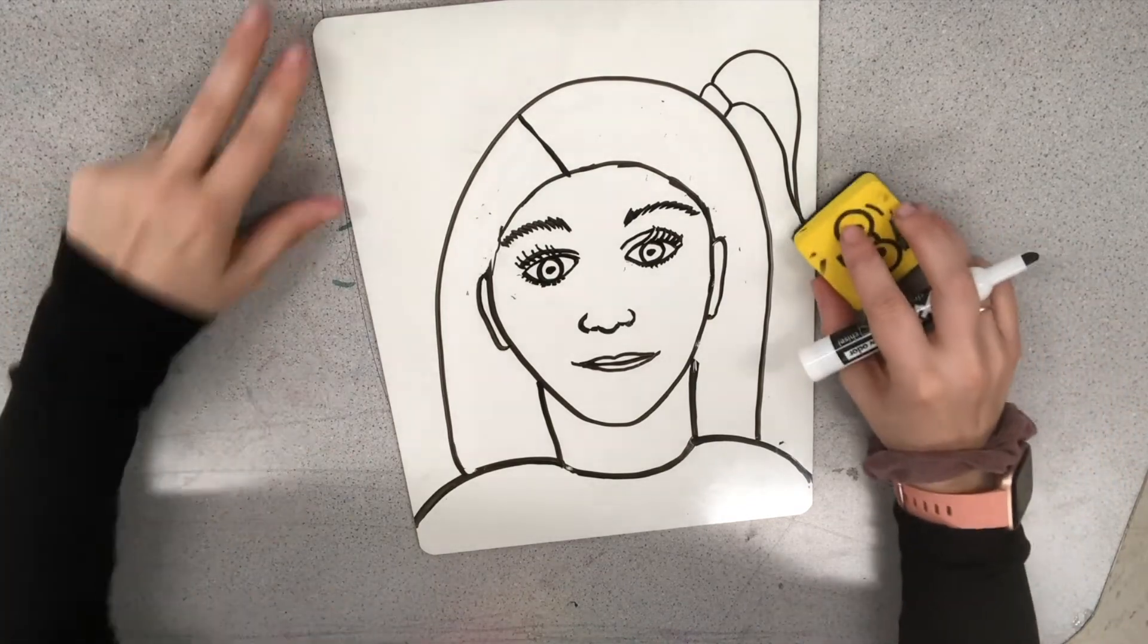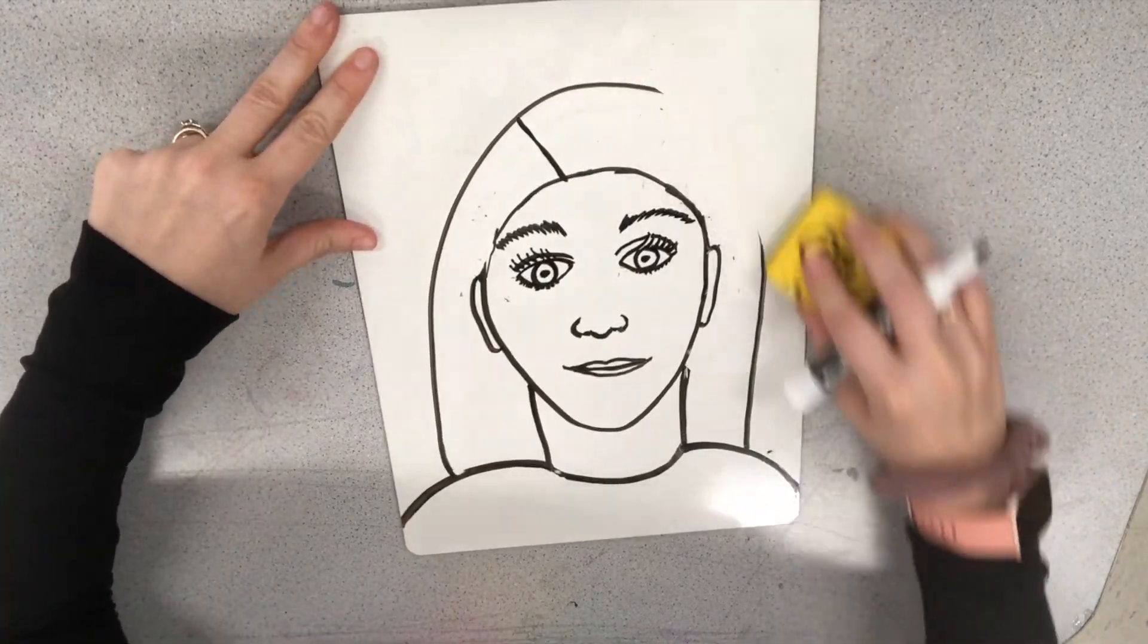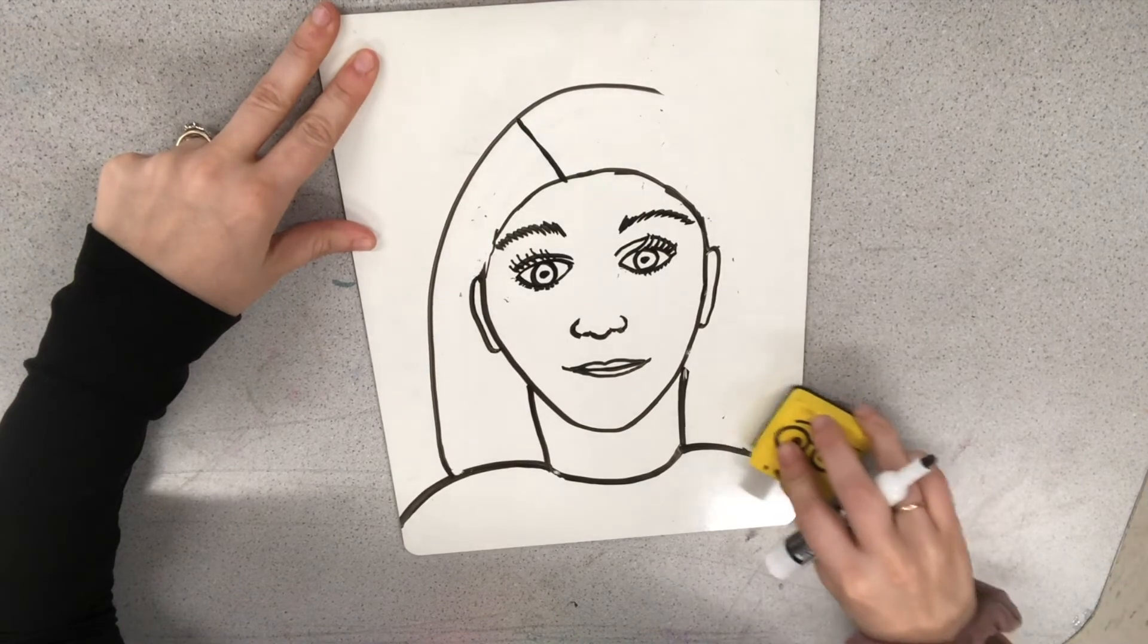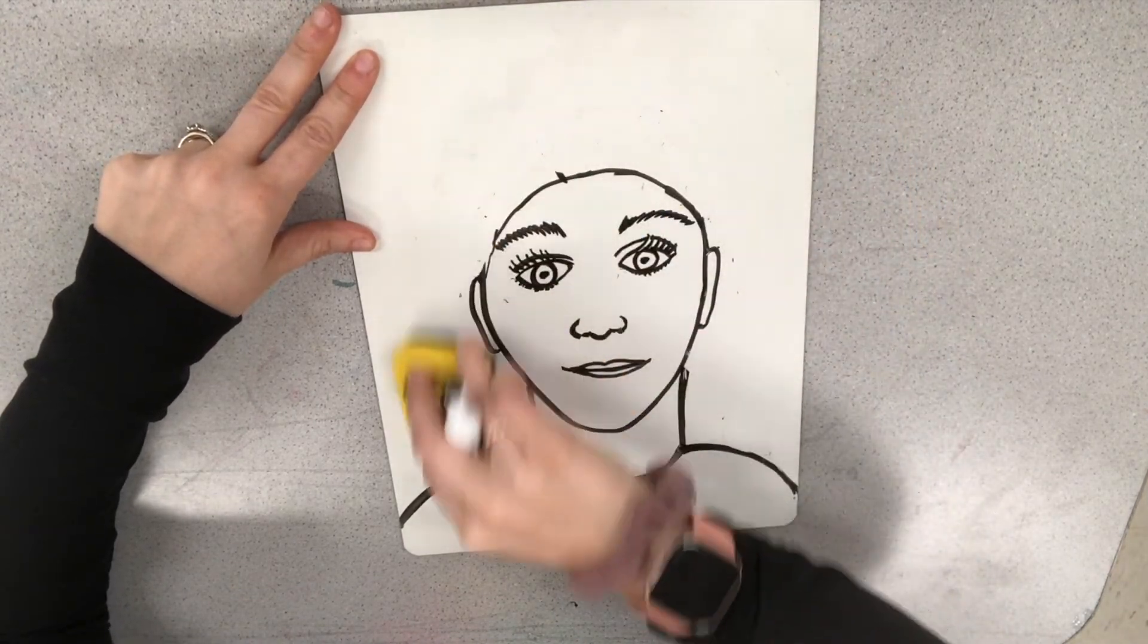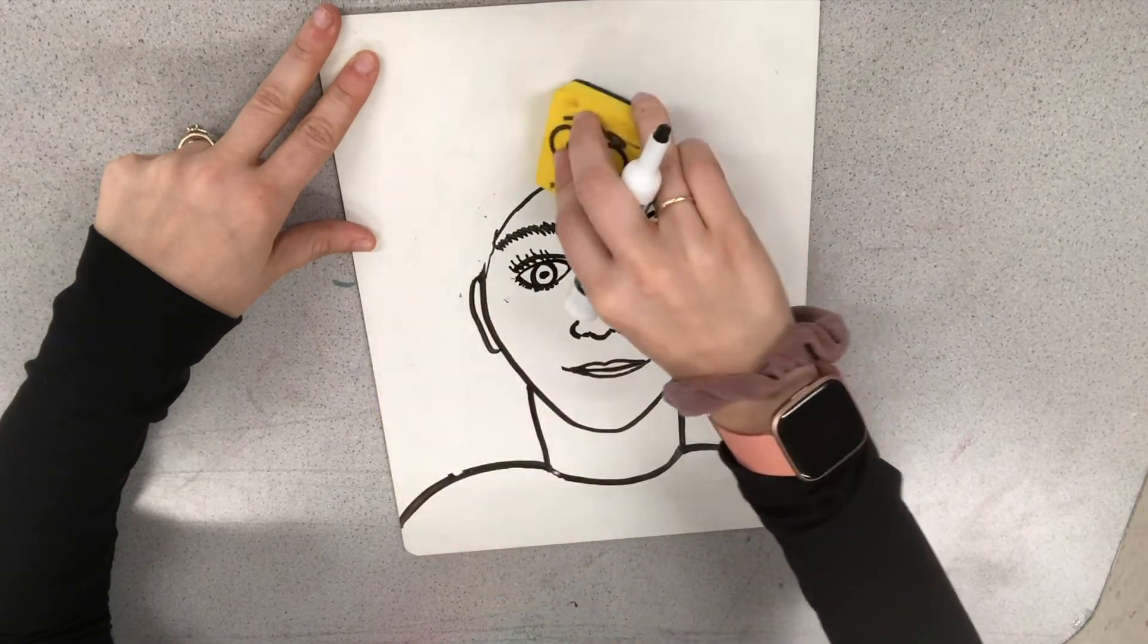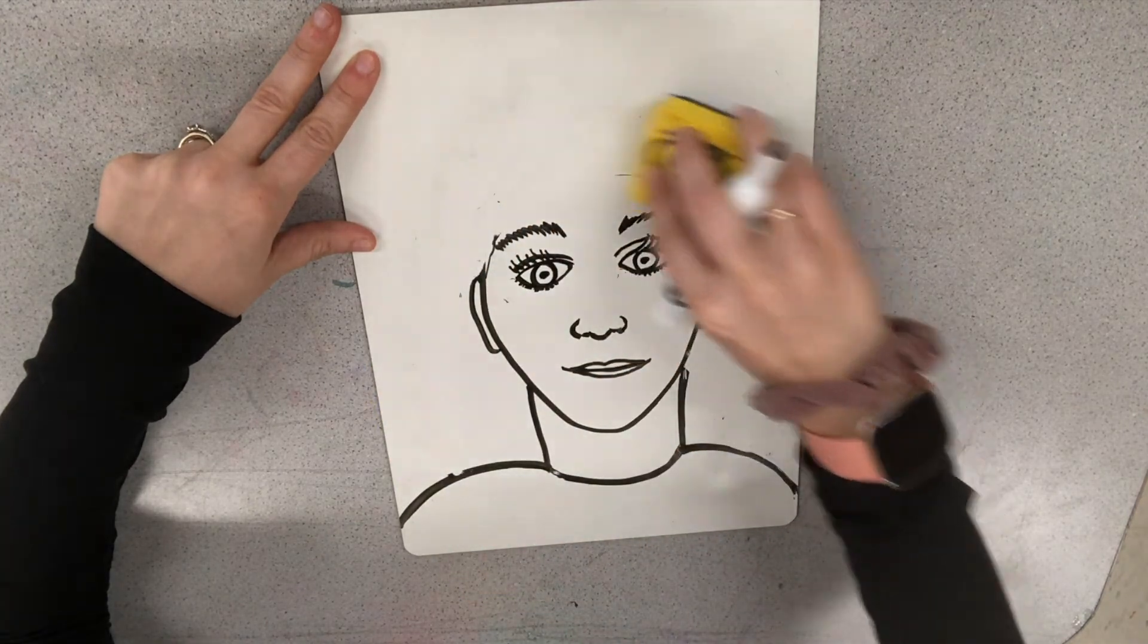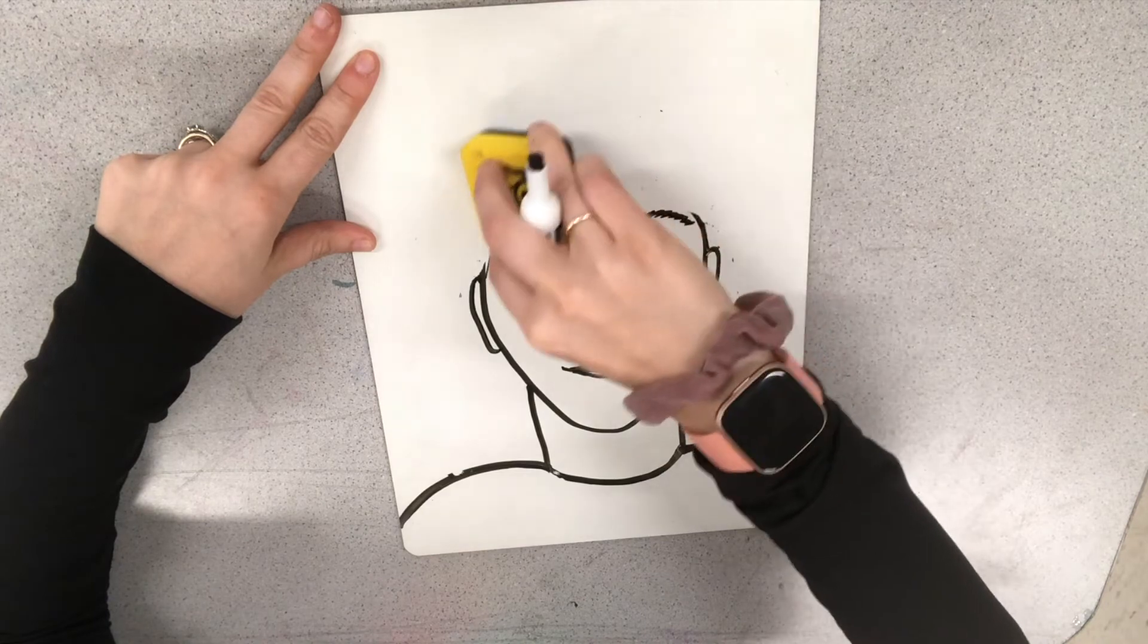So there's just some basic ones for you. But really look at the person that you're drawing. And try to make it look like them. Again, there will probably be some hair on the forehead. So add that as well.